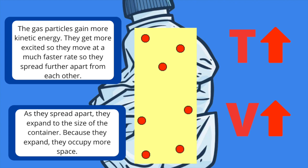As a result, these particles get excited so they move at a much faster rate within the bottle. Because they're excited, they spread further and further apart from each other — they spread out, they expand — which increases the amount of space taken up. Since the air particles occupy more space, therefore volume increases.